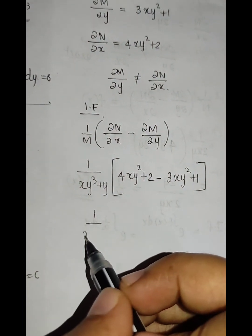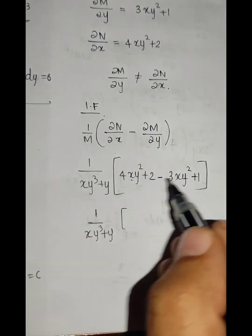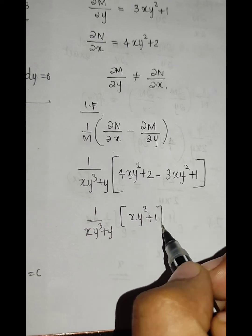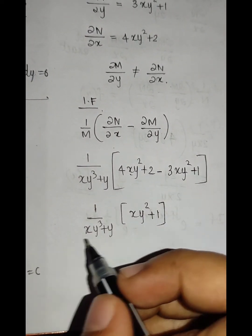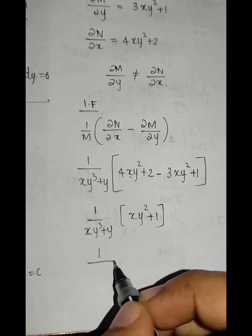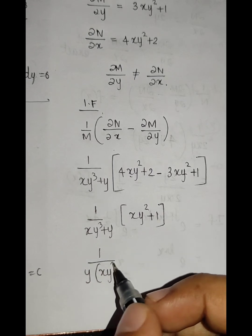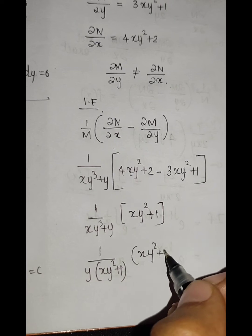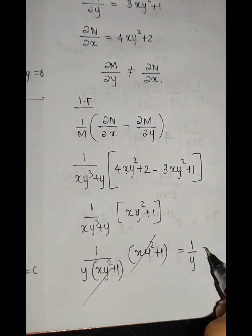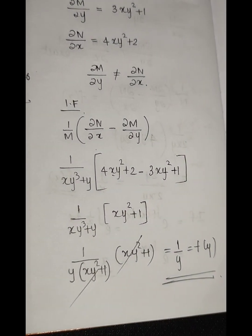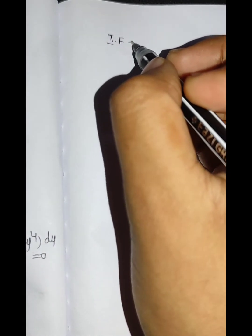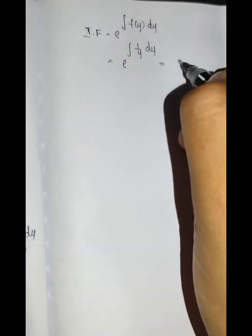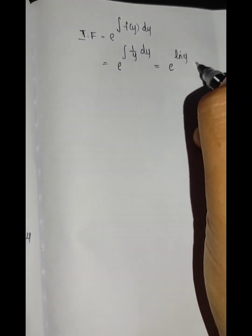1/(xy³ + y) times (xy² + 1): after cancellation this simplifies to 1/y, which equals f(y). The integrating factor is e raised to the integral of 1/y dy, which equals e raised to log y, and therefore the integrating factor is y.